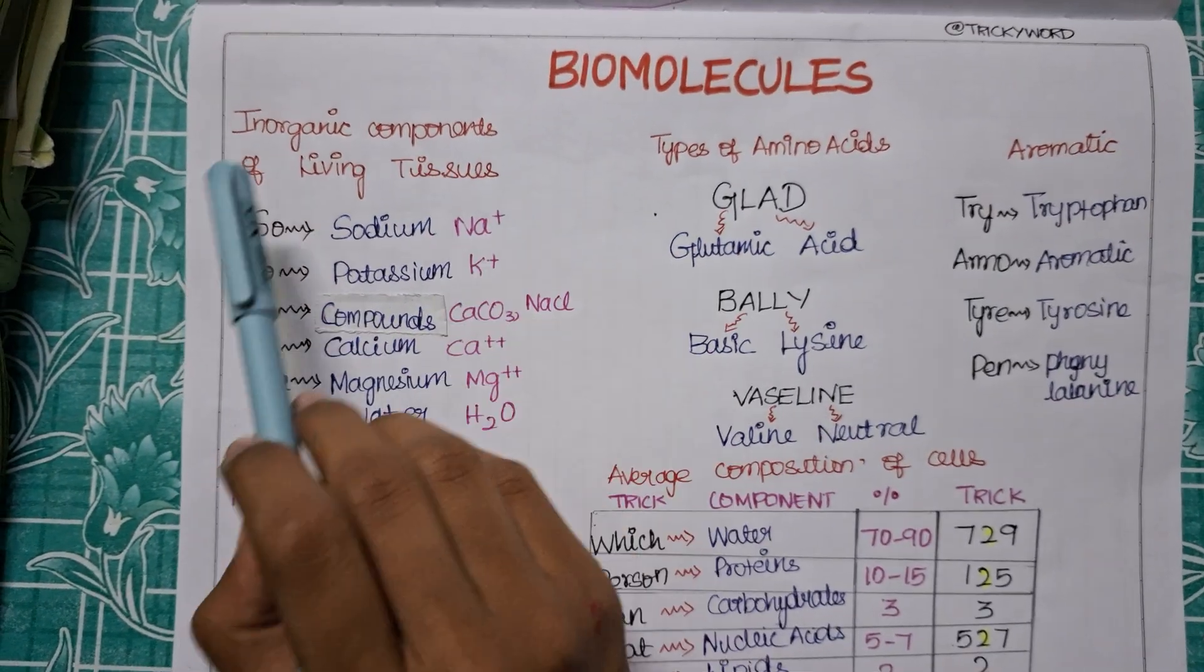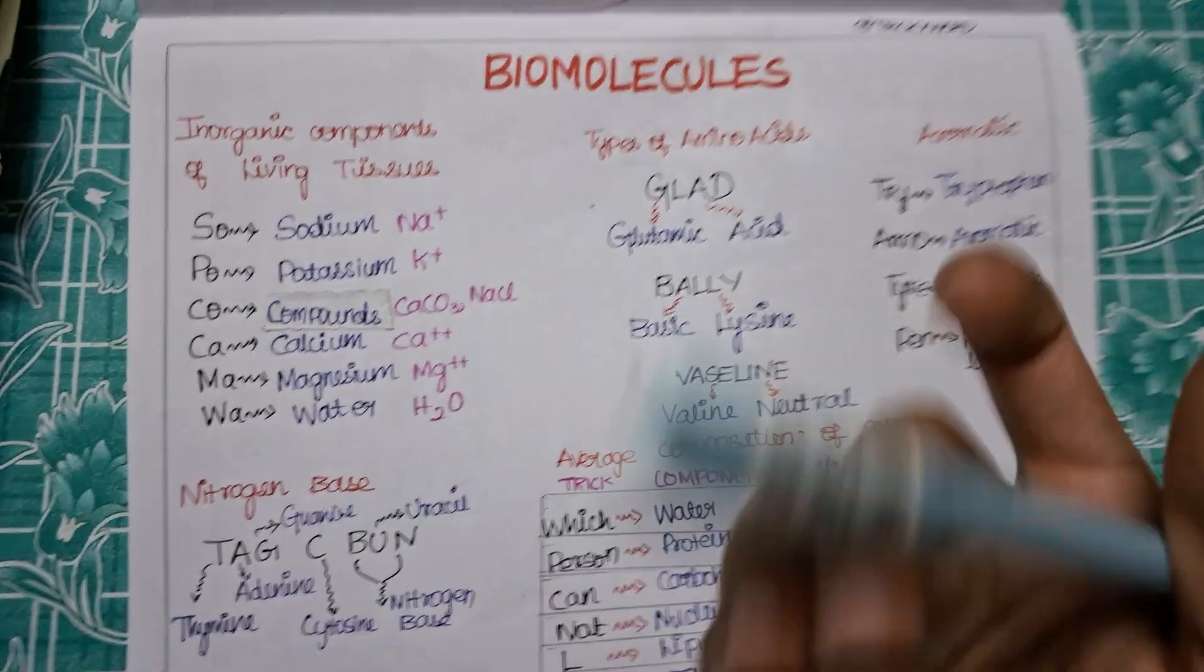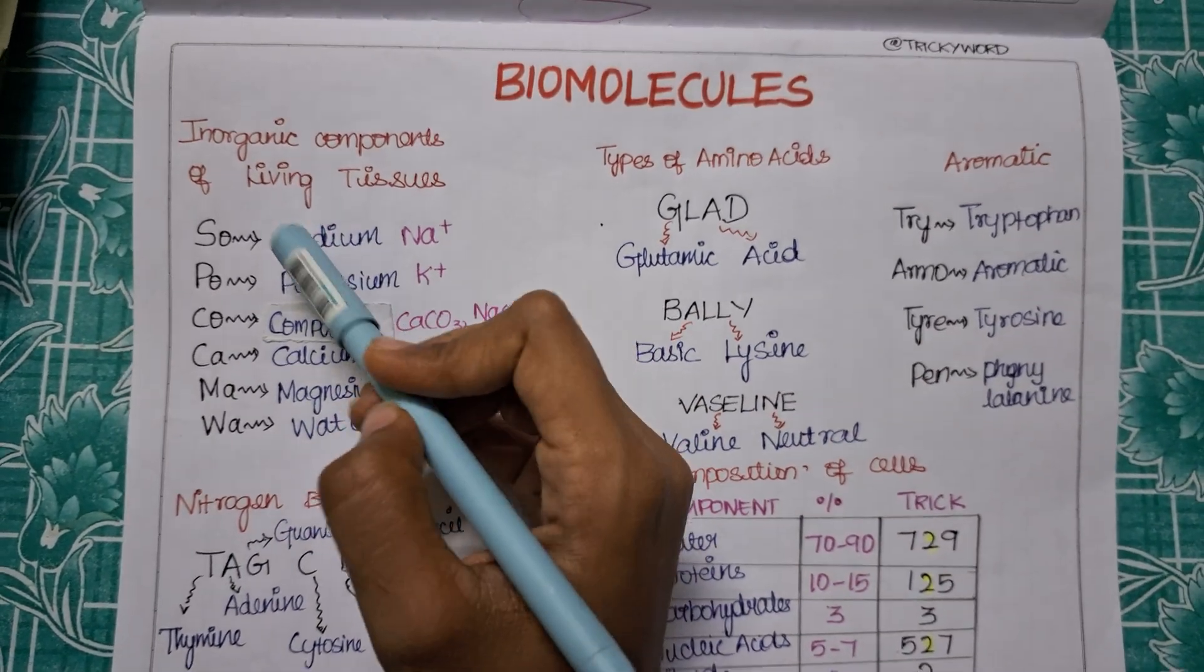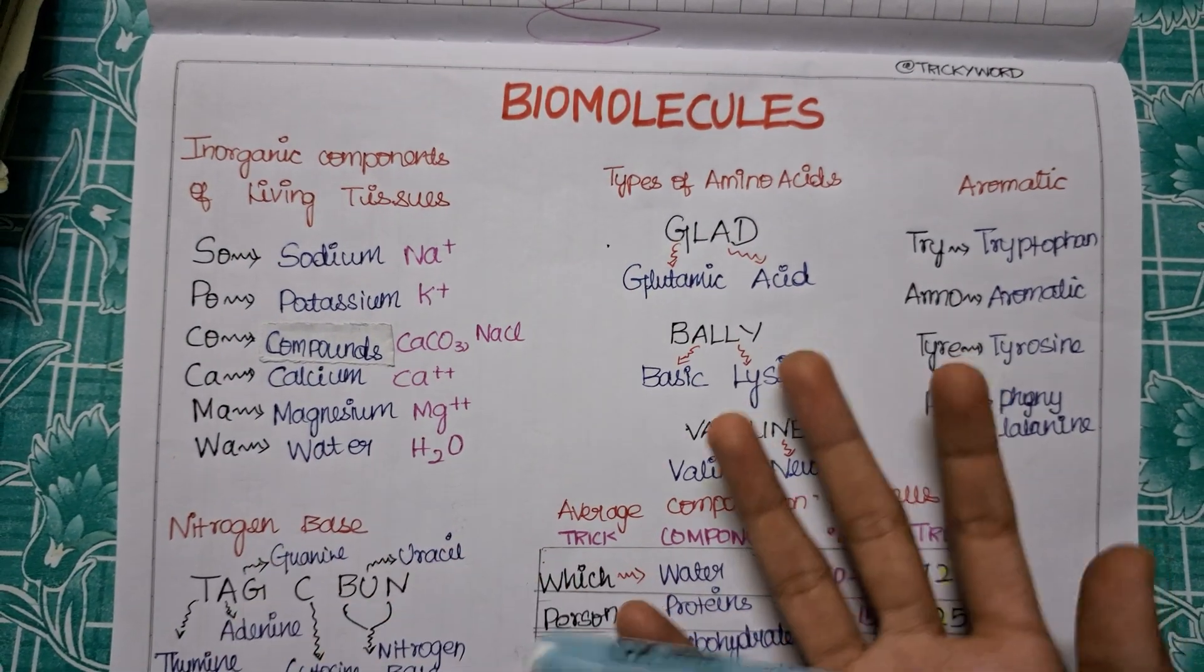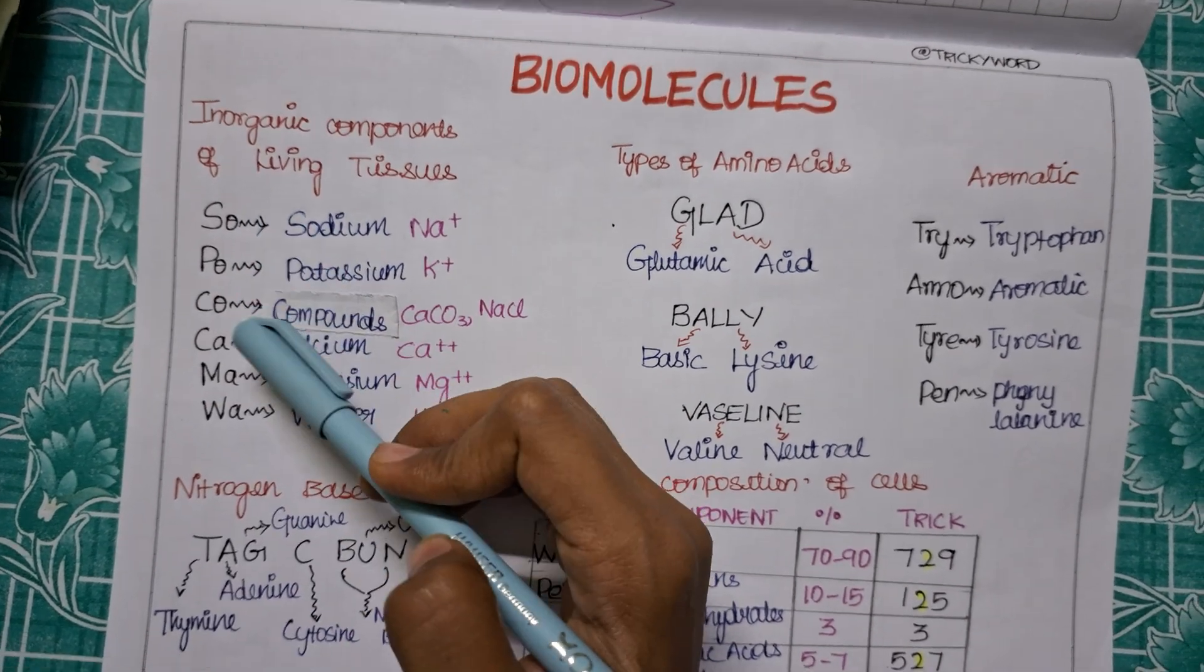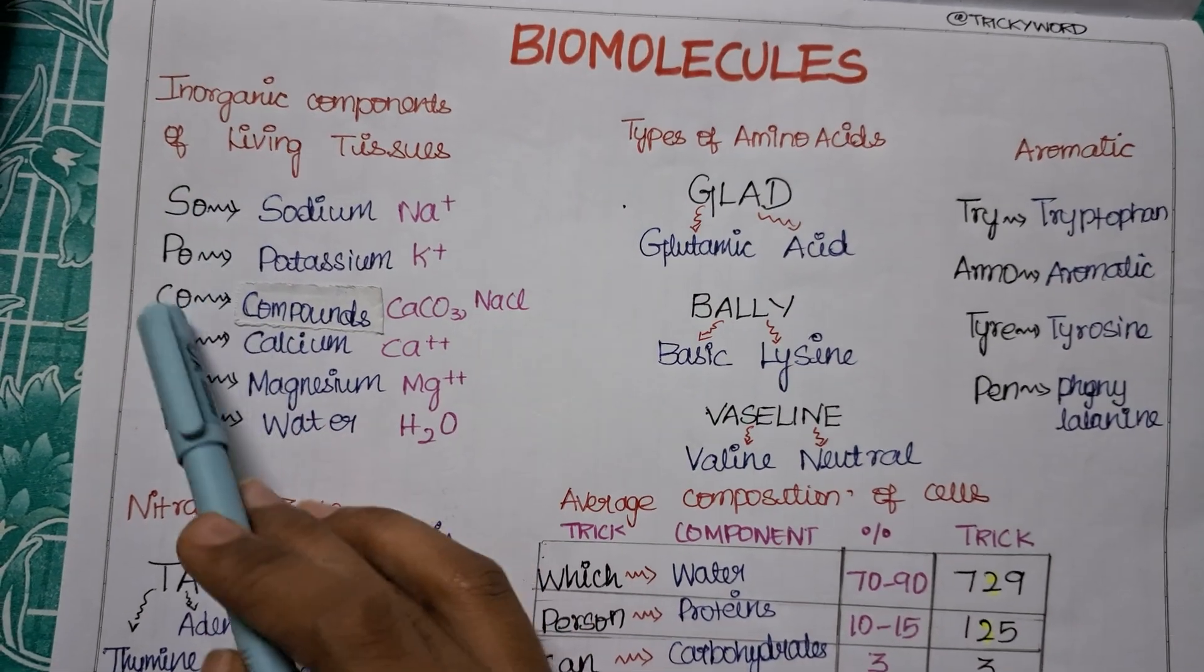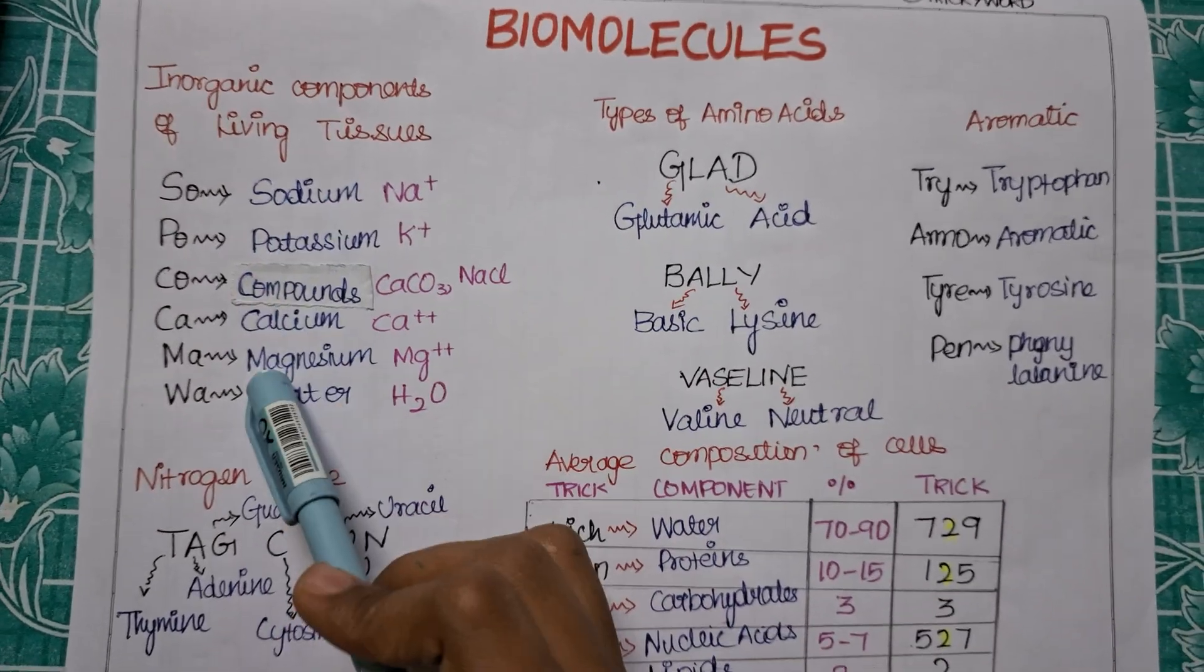Let's get into the video. The first trick will be for the inorganic component of living tissue. What are the inorganic components present in your living tissue? It will be a little funny but if you say it for three times, it will be memorized. So it is SOPOCOCOMAVA. SOPOCOCOMAVA - say it like three times, it will be memorized. And another trick is the first three will be starting with O and the next three will be having A.